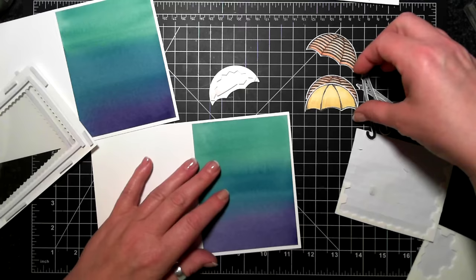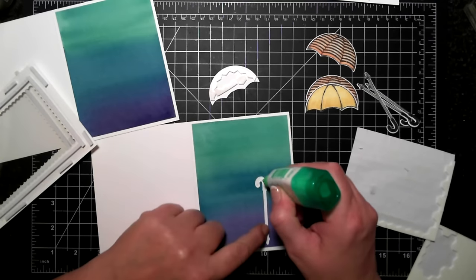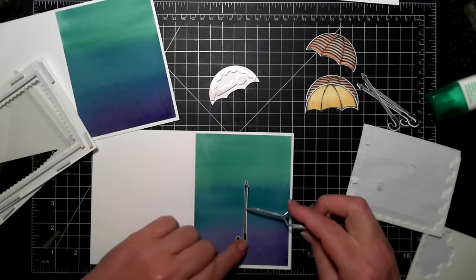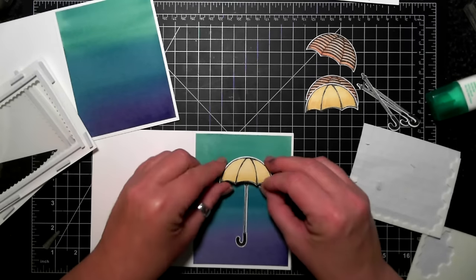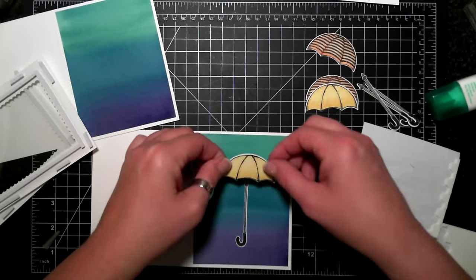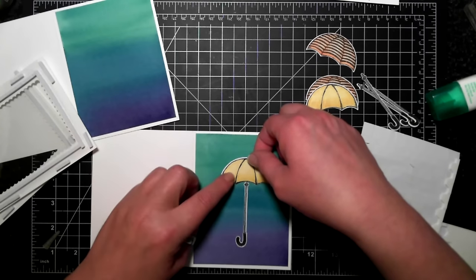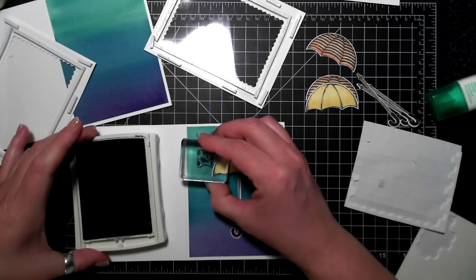So I'm using a bit of Tombow here in my tweezers and I am adhering the handle for the umbrella down straight in the middle. I have dimensionals around that umbrella too and I tried to make sure that nothing could get caught underneath the umbrella as well.